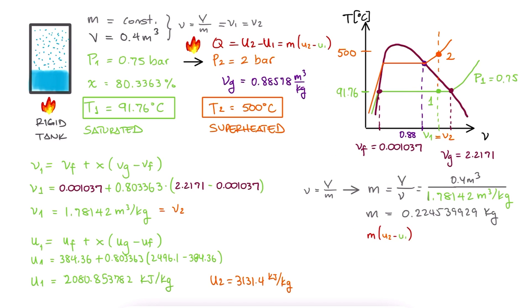With this value for mass, we can finally calculate the total change in internal energy, and therefore, the total heat.